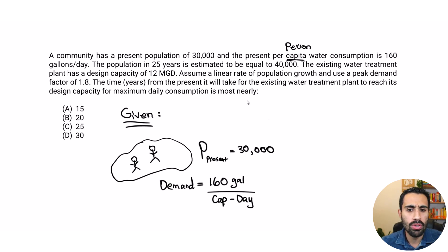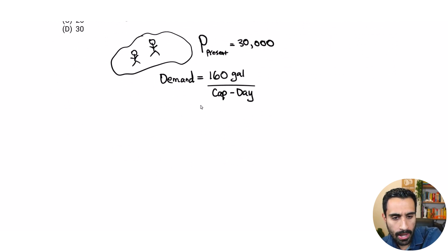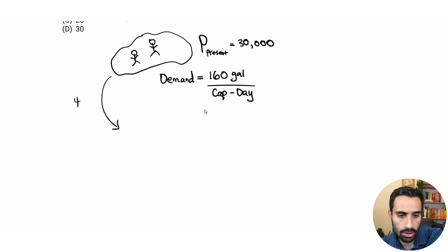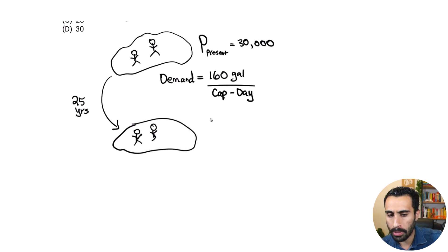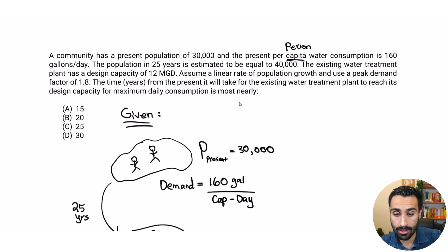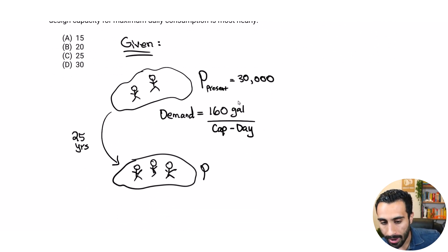The population in 25 years is estimated to equal 40,000. So 25 years from the present we have a new population that increases to 40,000. I'll put population at 25 years equals 40,000.